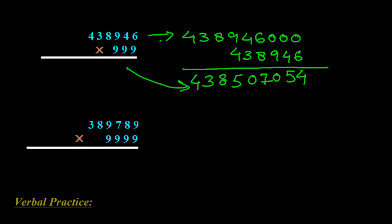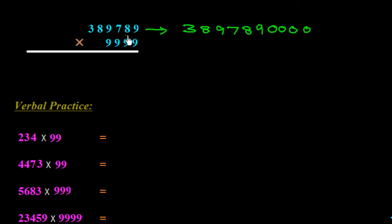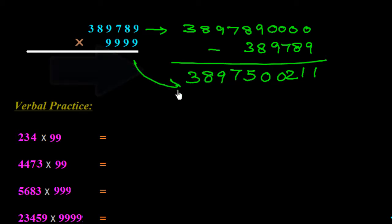In this way we can easily find the multiplication of any number with a series of 9s. Here we have 389789 multiplied by 9999 — there are 4 digits in the 9-series, so we add four zeros: 3897890000. We subtract 389789: 10 minus 9 is 1, 9 minus 8 is 1, 9 minus 7 is 2, 9 minus 9 is 0, 8 minus 8 is 0, 8 minus 3 is 5 — giving 389399211.